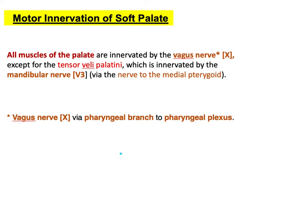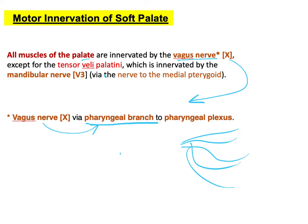To summarize: all muscles of the palate are innervated by the vagus nerve, which gives a pharyngeal branch participating in the pharyngeal plexus — except the tensor veli palatini, which is innervated by the mandibular nerve via a branch known as the nerve to medial pterygoid.